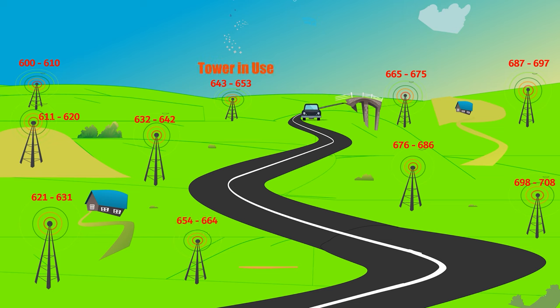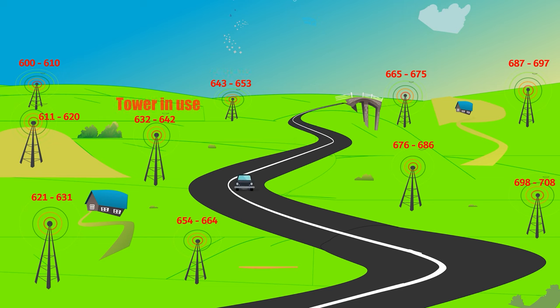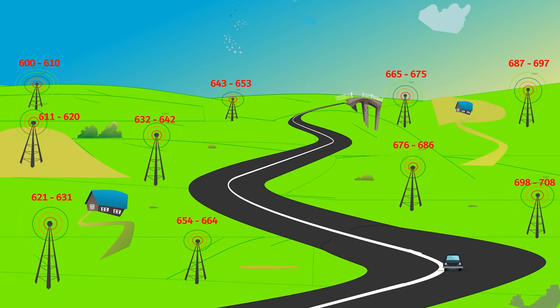This is because the cellular network is designed to constantly monitor the signal strength and quality of the connection, and to switch the device to the nearest available cell tower when necessary.